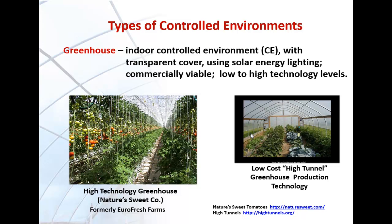The most common type of controlled environment was and is the greenhouse: indoor, with a transparent cover, using solar energy for lighting and heating. It is commercially viable throughout North America and the world. It has different levels of technology — on the left a high-technology greenhouse with high productivity and high cost; on the right, a low-cost high tunnel greenhouse with lesser productivity on a 12-month basis.